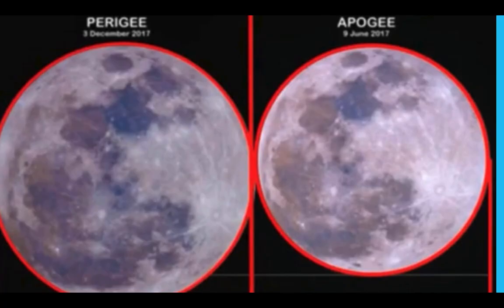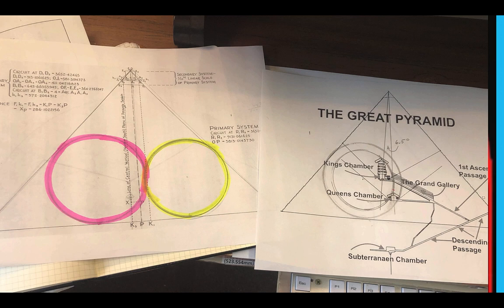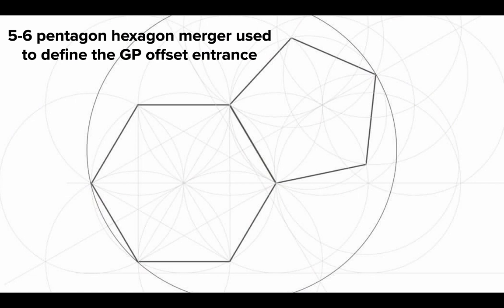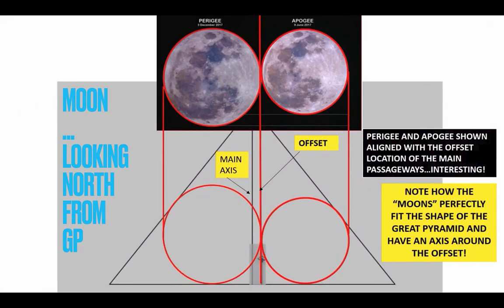We want to look at apogee — when the Moon is farthest from the Earth — and perigee, when it's closest and appears bigger. I did some measuring and found some interesting things. We've shown before how the merger of the five and six, the pentagon and hexagon — the merger of heaven and earth — defines the entrance of the Great Pyramid. But look: the Moon's apogee and perigee also define the original entrance of the Great Pyramid.